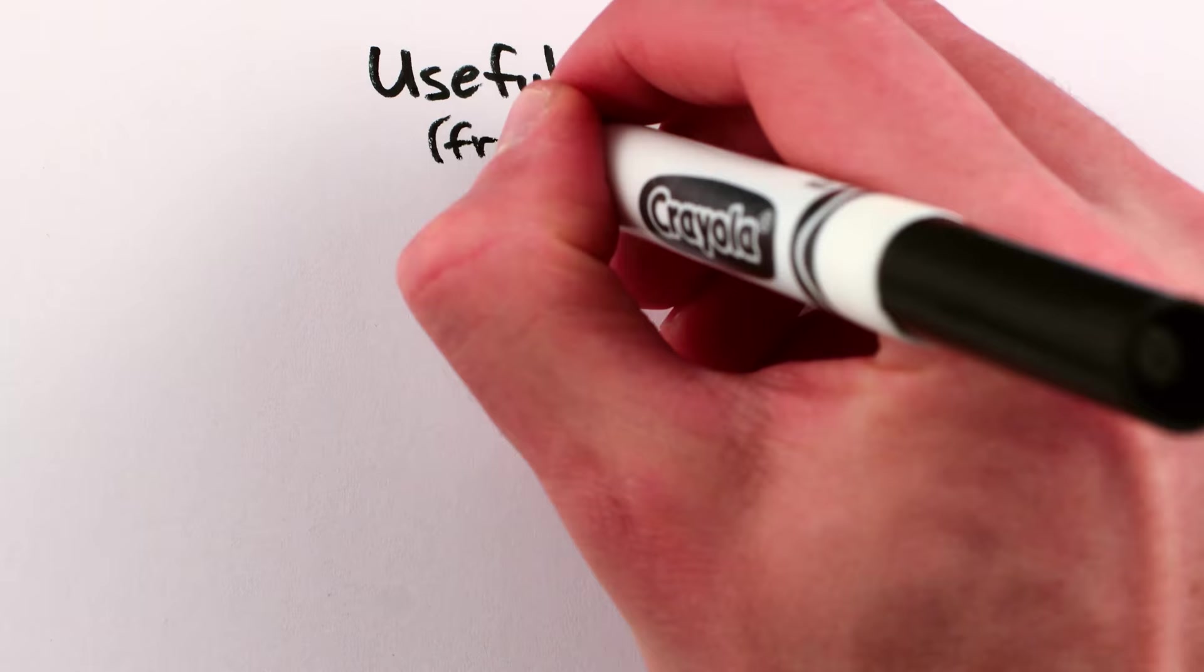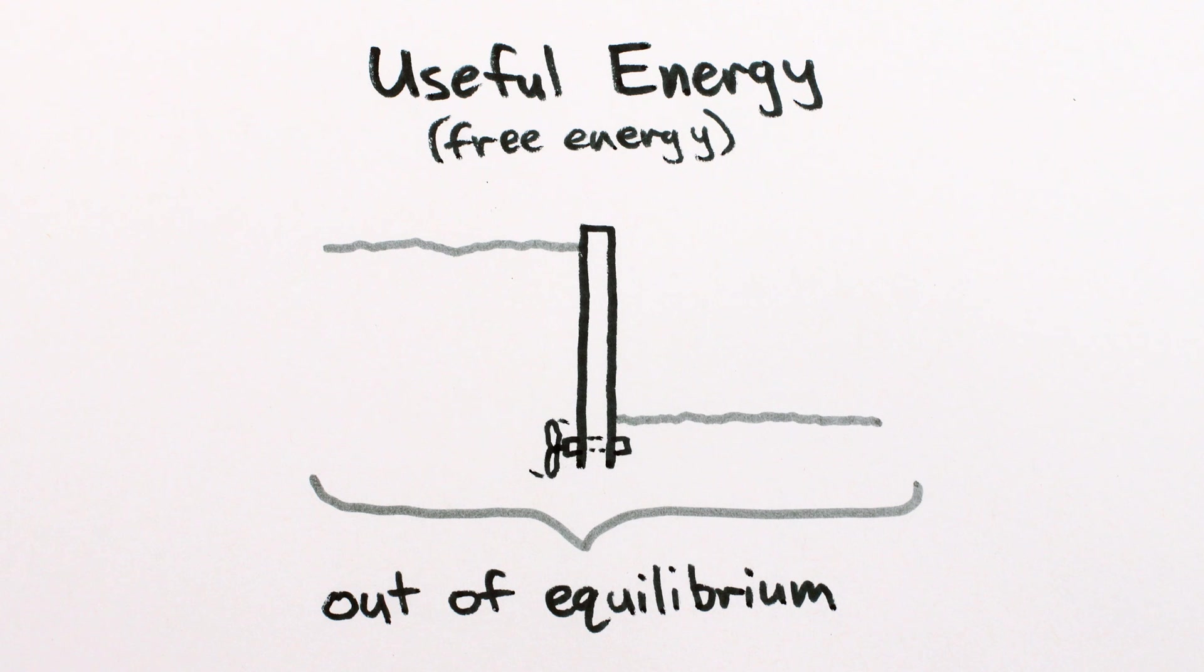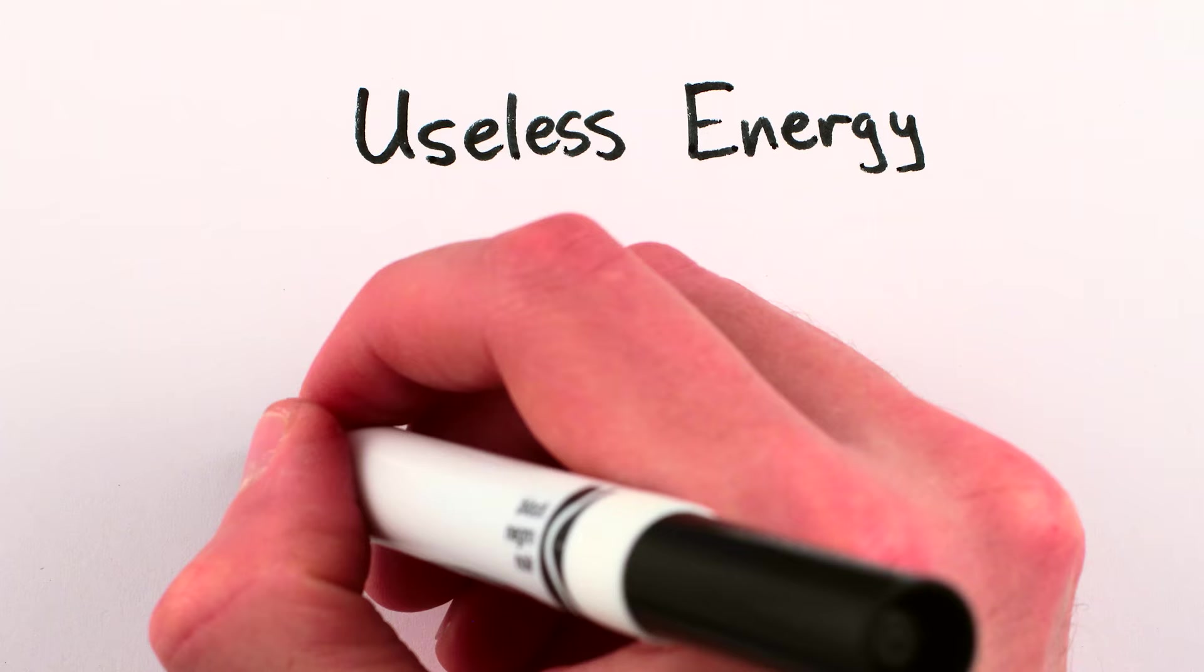even though the total energy would be the same. So useful energy is low-entropy out of equilibrium energy that can be put to work, to turn a turbine or push a piston or melt an ice cube.